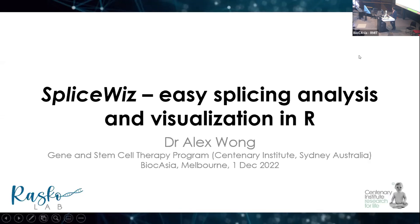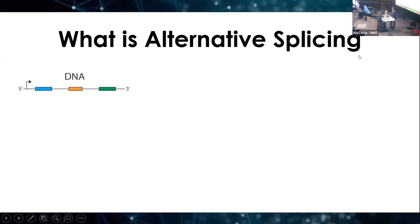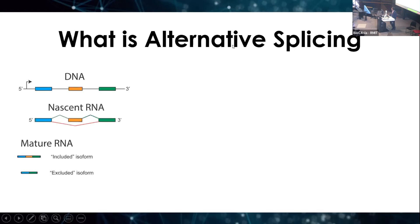Just a bit of background on what alternative splicing is. In most genes at the DNA level, the genetic information isn't contained in one single block, but rather as multiple discrete blocks called exons, interspersed by intervening sequences called introns. When genetic information is transcribed from DNA to RNA, introns are removed during a process called splicing, forming a mature messenger RNA. Some exons can be included or excluded through an alternative definition of introns during splicing — what is known as alternative splicing.